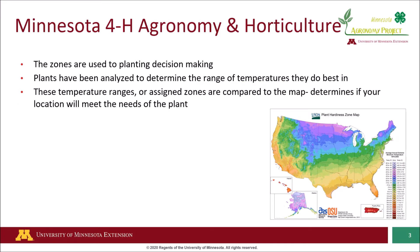We can use this map to help us make planting decisions — mostly whether the plants that we want to plant will actually survive in the area that we live. Many plants have been analyzed to determine the range of temperatures in which they do best, or what is the absolute coldest temperature they can take and still come back as viable plants in the spring.